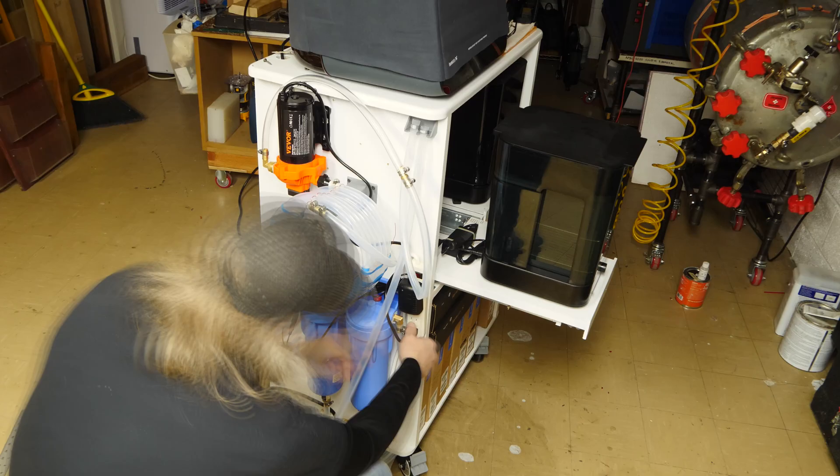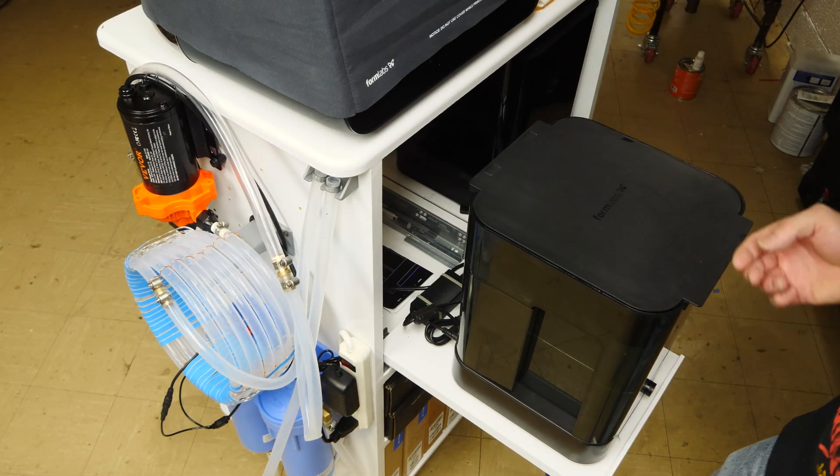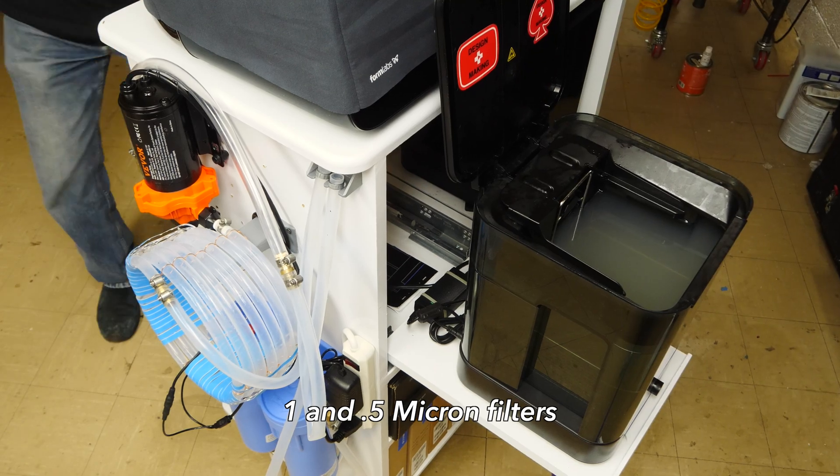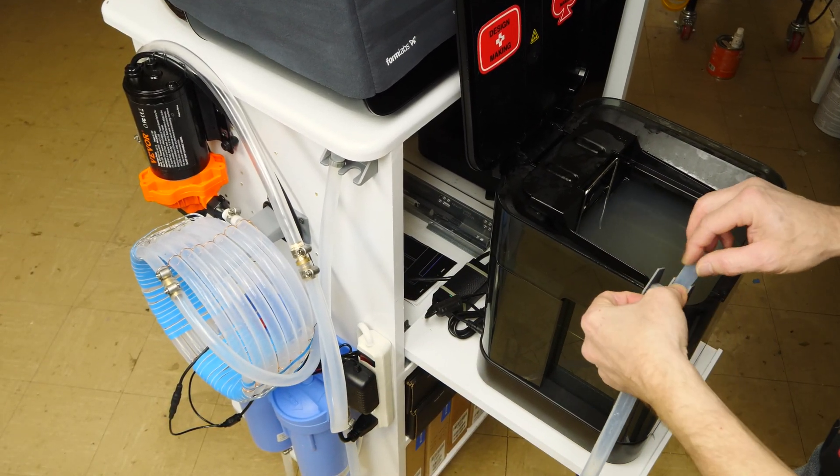That power strip has an on and off switch. This is the form wash, you can see the stuff's a little bit cloudy but plenty clean enough for this system. It works very well.